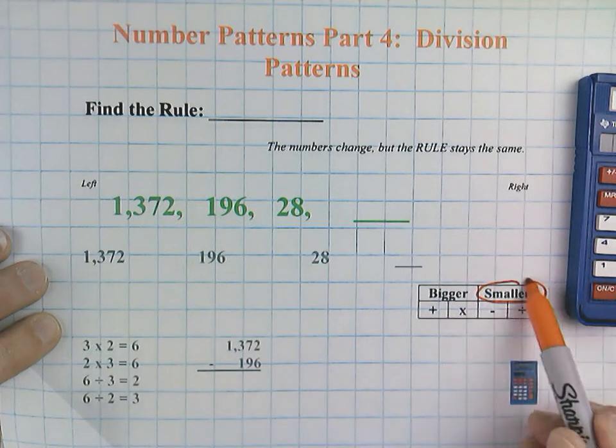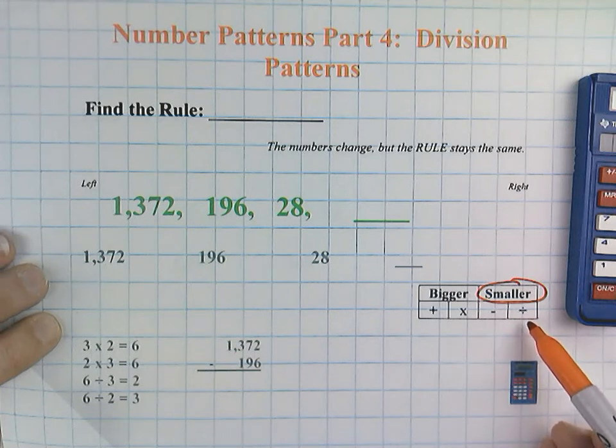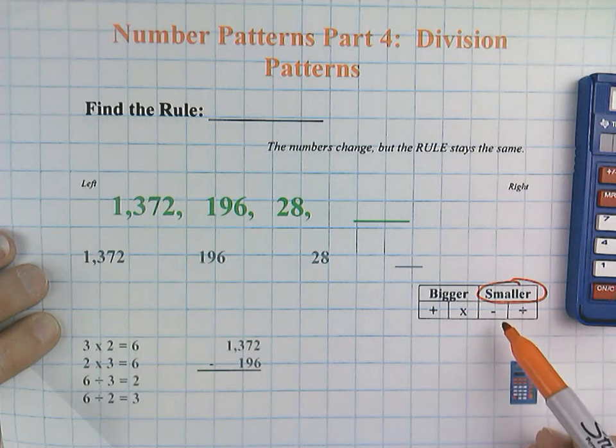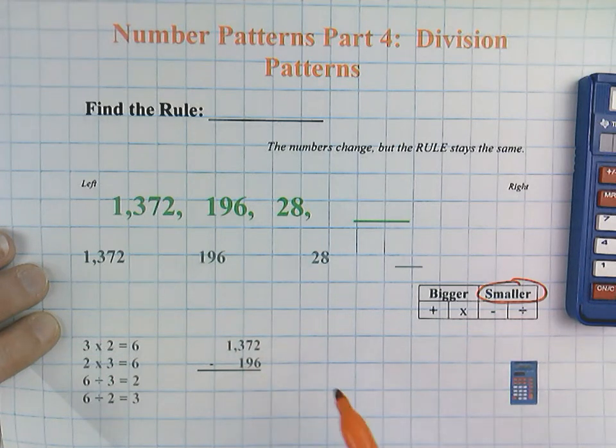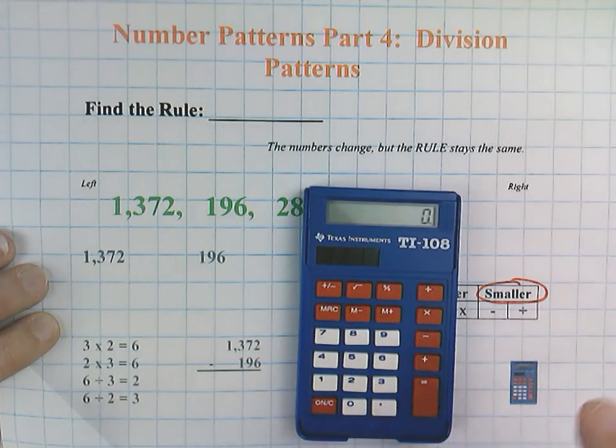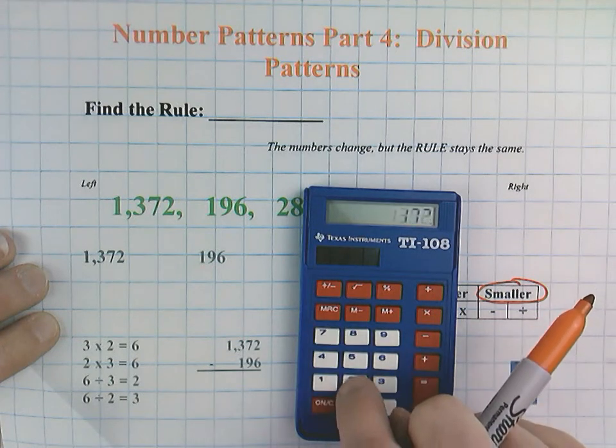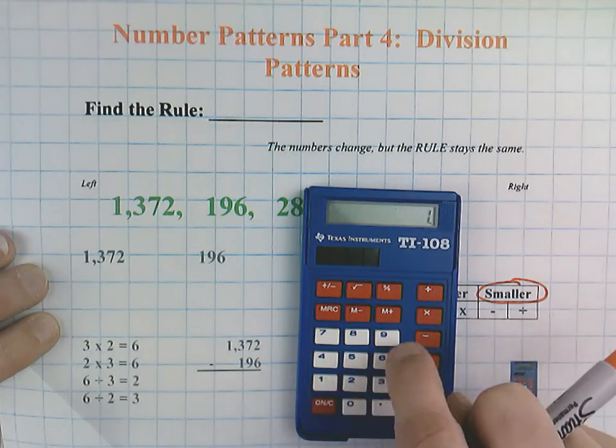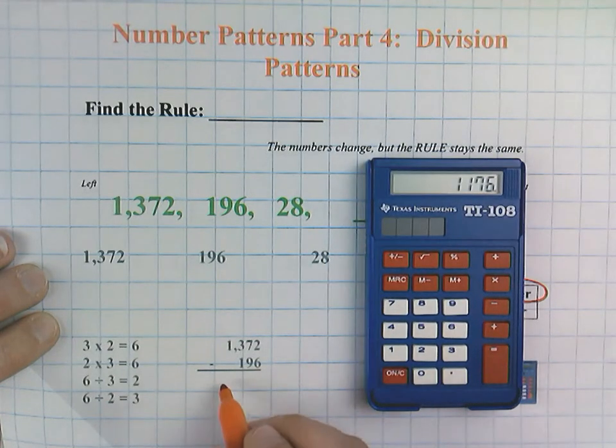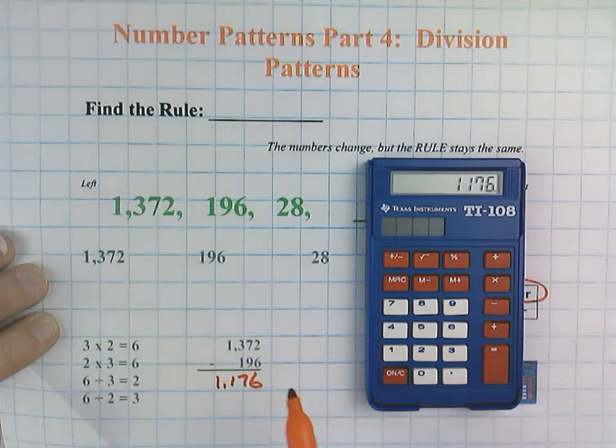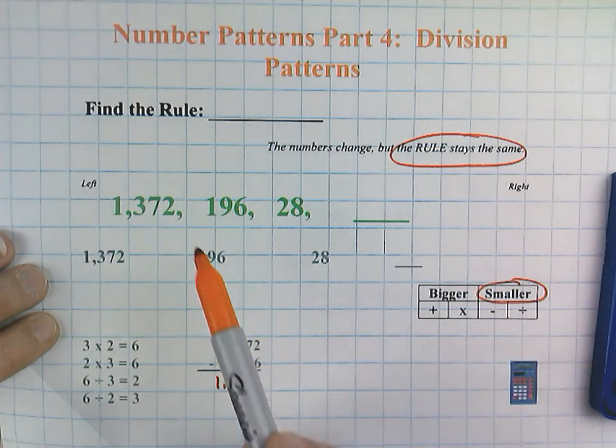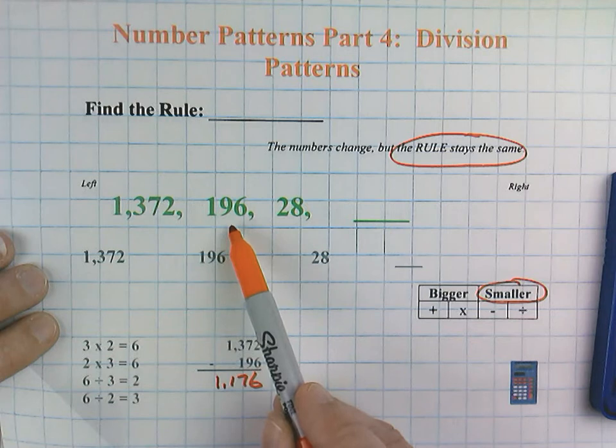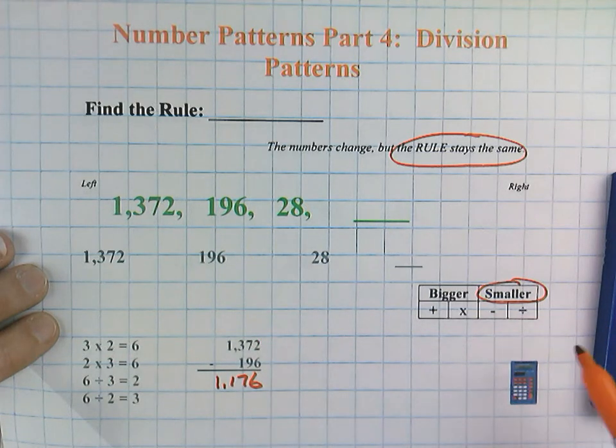The numbers are definitely getting smaller here, which means it's either going to be subtraction or division, and I'll show you a little trick for ruling out subtraction. If we were to use subtraction, 1,372 minus 196 would equal 1,176. So we would have a rule of minus 1,176. Remember that when we do rules, the rule stays the same, meaning that even though the rule works for here, it will definitely not work for 196. That's way too big. So we know for sure that this is a division problem.